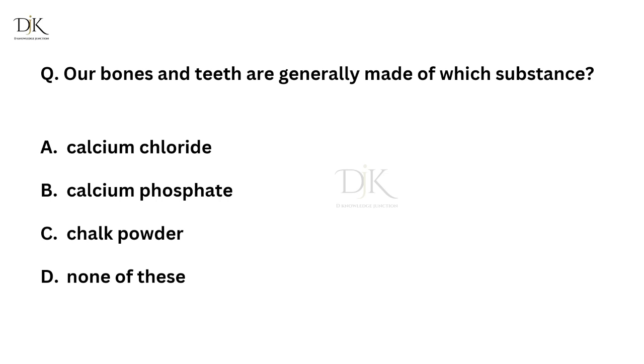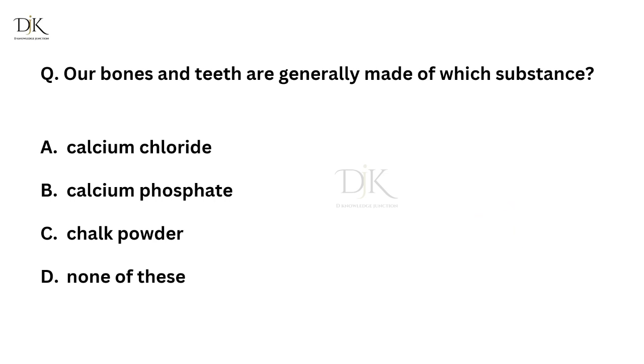Our bones and teeth are generally made of which substance? Right answer is calcium phosphate.